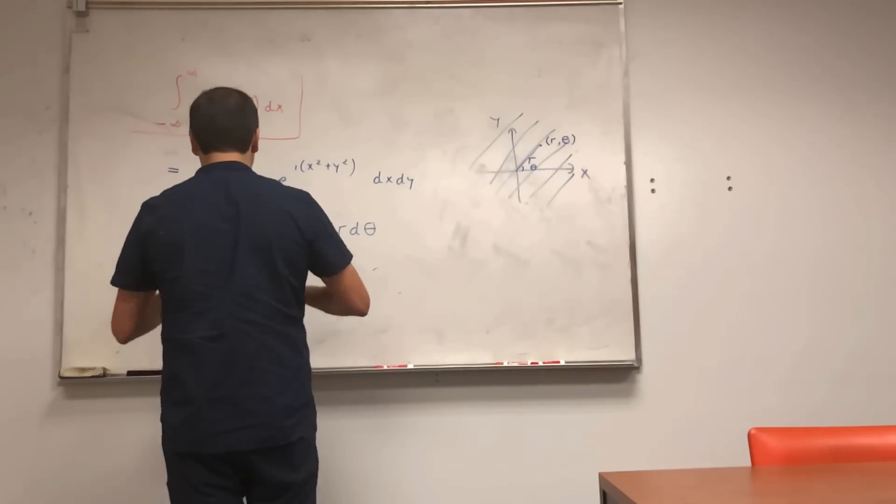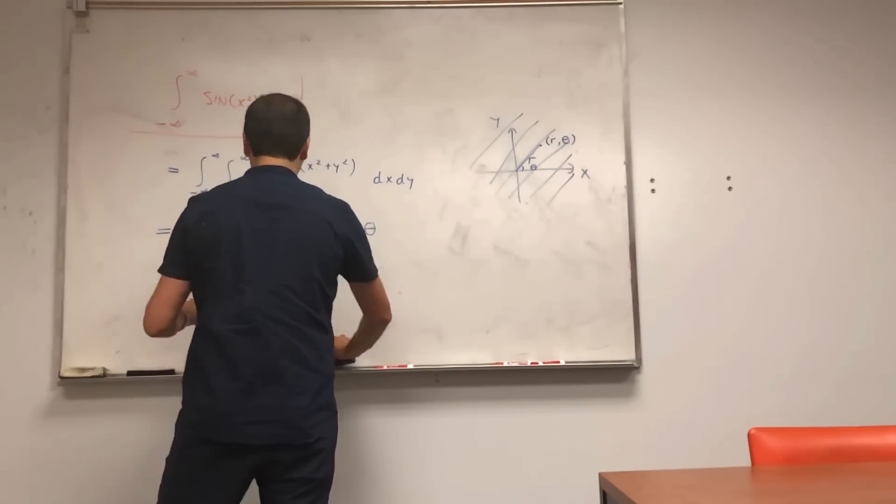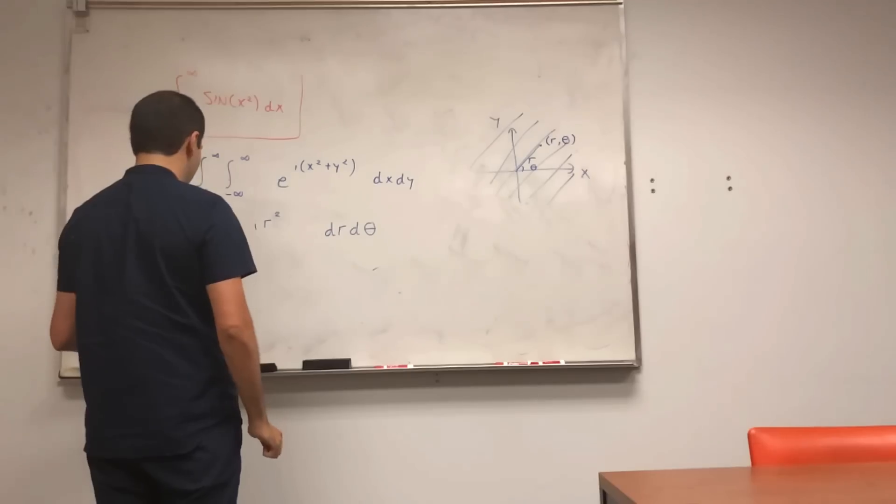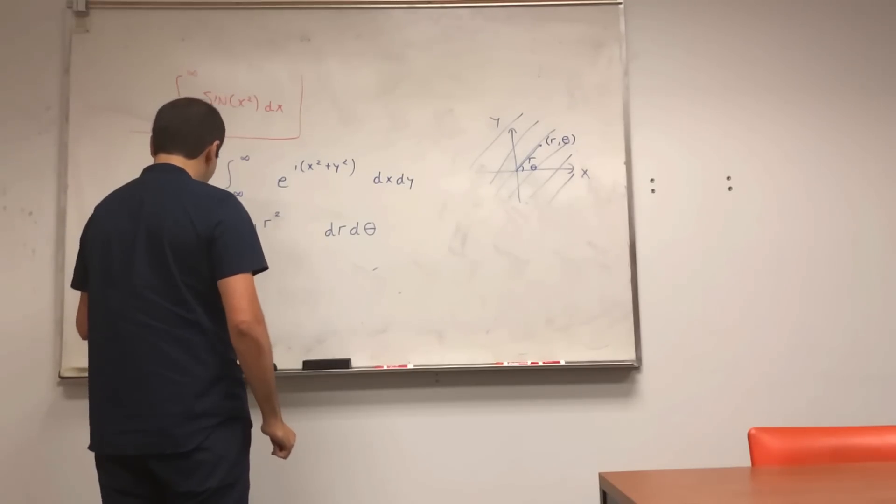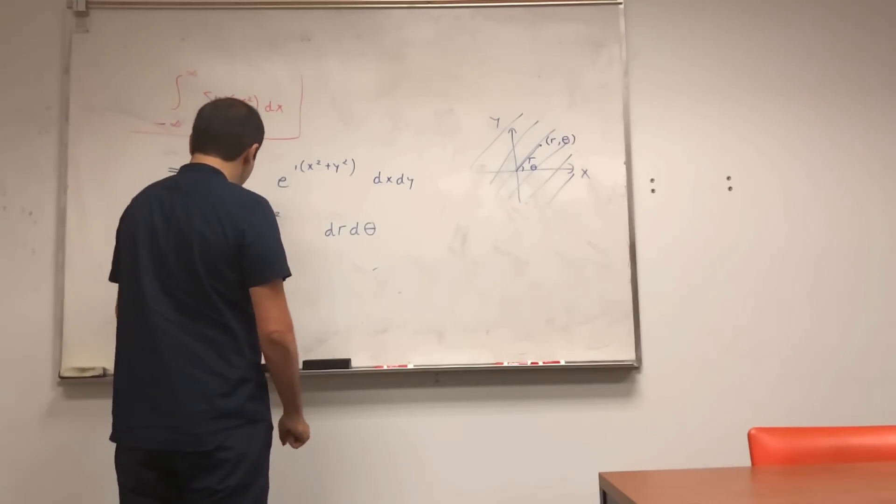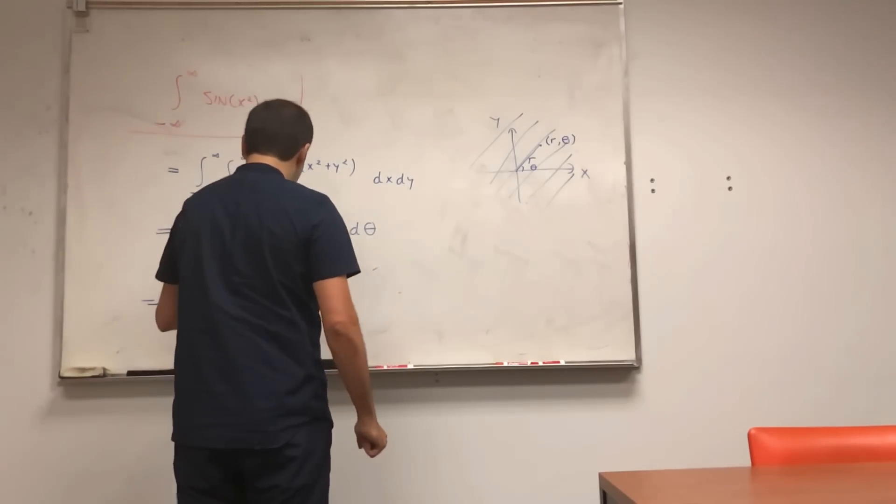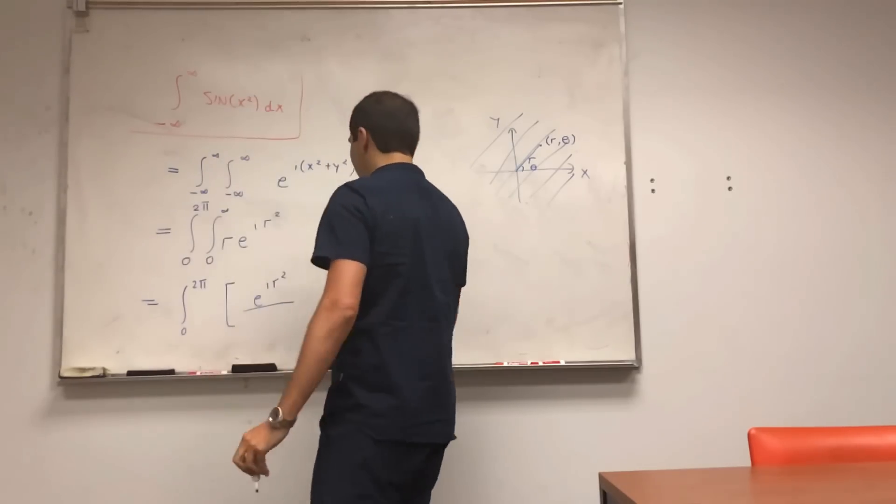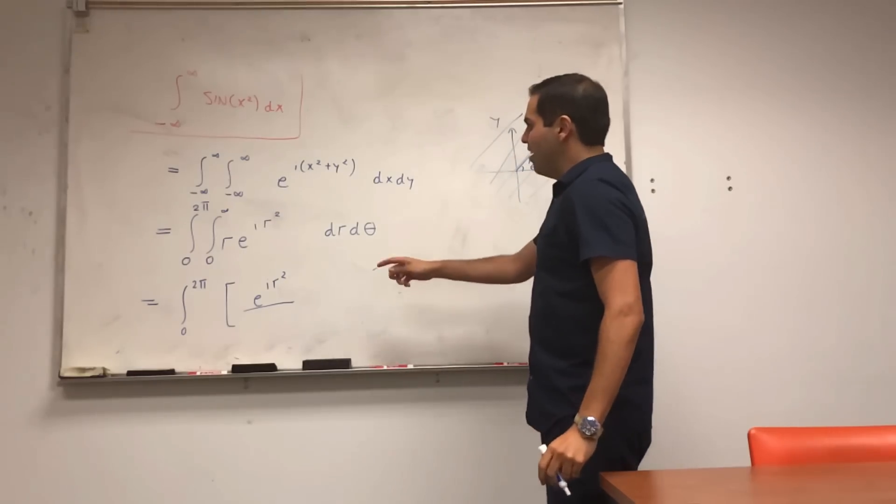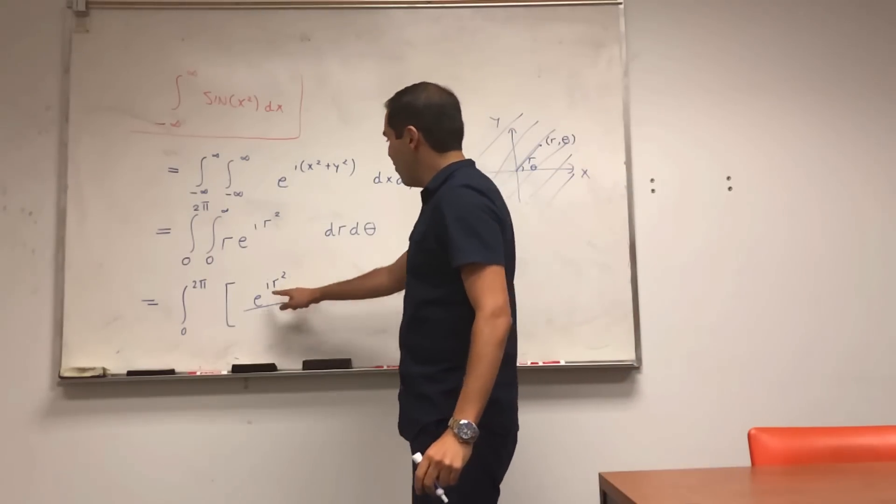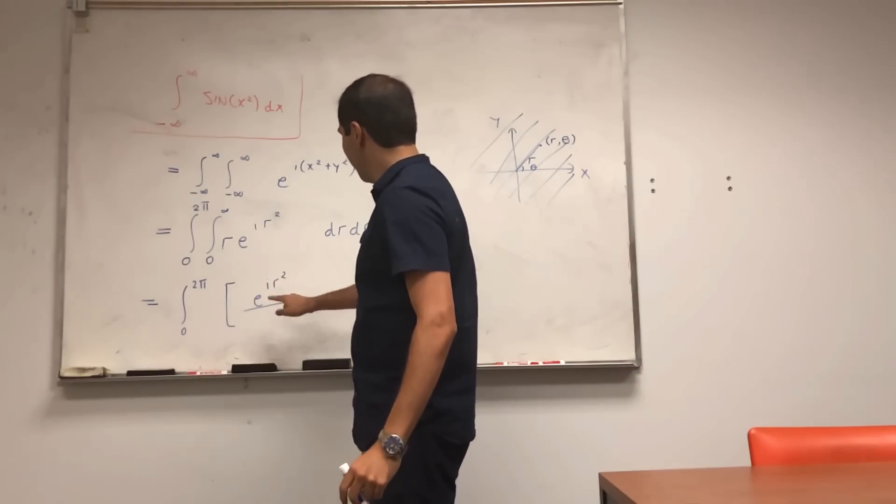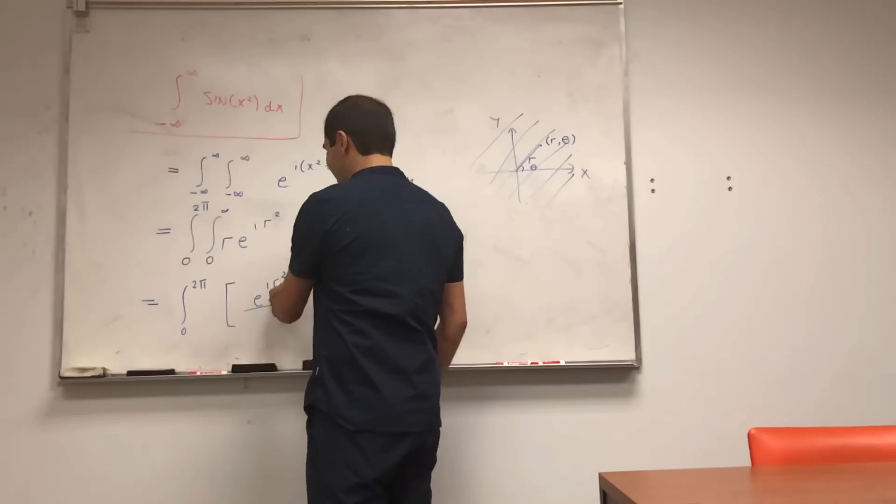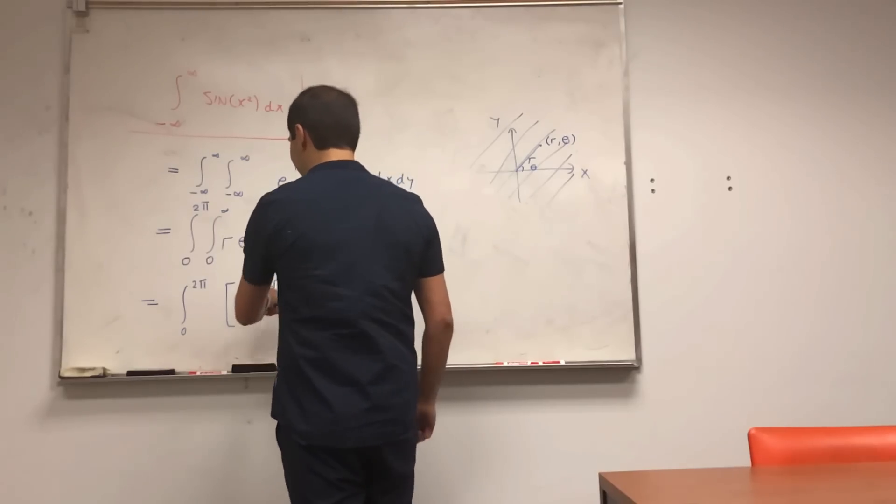And this is very good, because it turns out you can find an antiderivative of e to the i r squared, r dr d theta. Let me rewrite this this way. r e to the i r squared dr d theta.